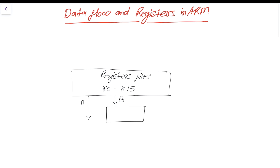Bus B passes through the barrel shifter, and then through buses A and B the data goes to the ALU.